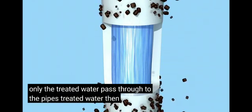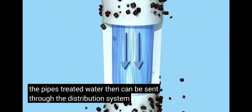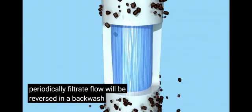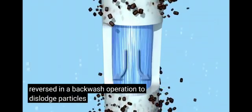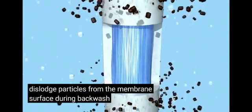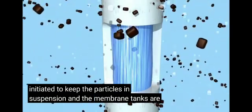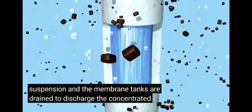Treated water then can be sent through the distribution system. Periodically, filtrate flow will be reversed in a backwash operation to dislodge particles from the membrane surface. During backwash, aeration is initiated to keep particles in suspension, and the membrane tanks are drained to discharge the concentrated water.